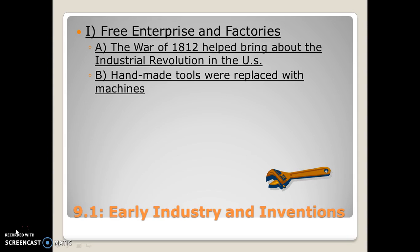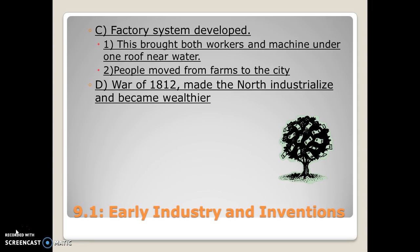This revolutionized how we make things — instead of taking months or weeks to make a t-shirt, it only takes a couple of minutes. From there, we developed the factory system, which brings workers and the machines they need to manufacture items together near their energy source. At that time, that energy source was water, which was very plentiful in New England due to proximity to rivers and the Atlantic Ocean.